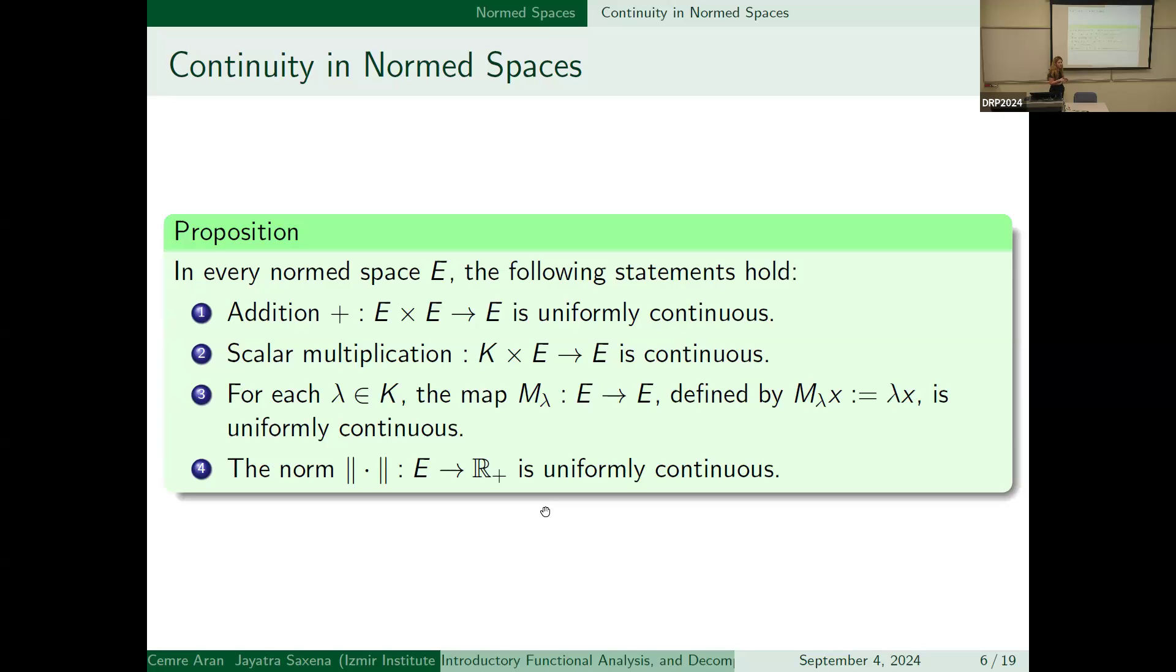And norm spaces are continuous. The first statement and third statement show us it's uniformly continuous, and the second one shows the continuity of the norm spaces. Addition, scalar multiplication, and multiplication of norm, M lambda x is equal to lambda x, is uniformly continuous, and the norm from E to R positive is uniformly continuous.